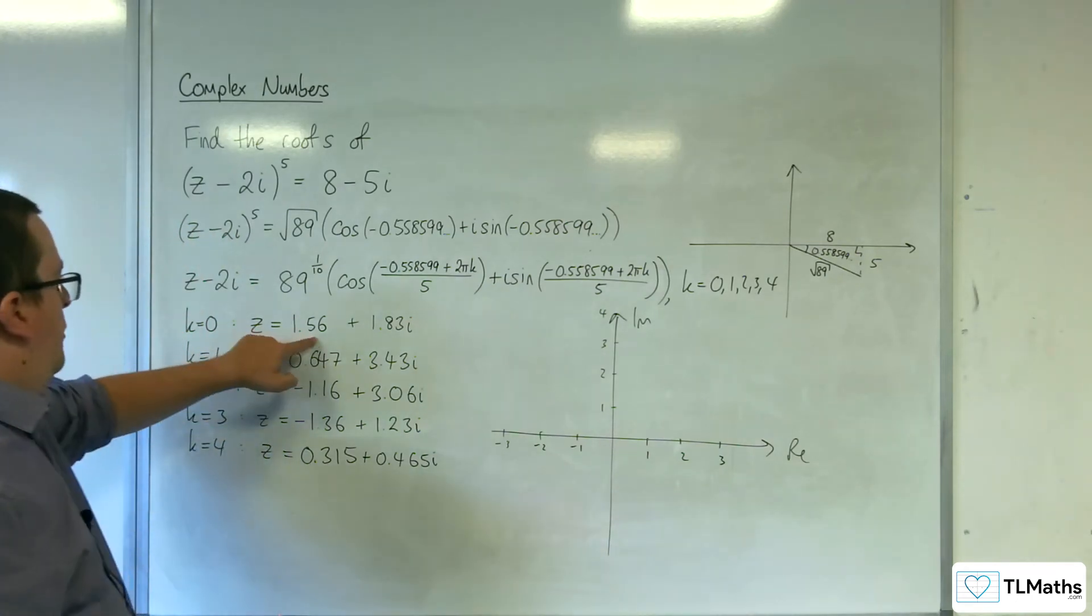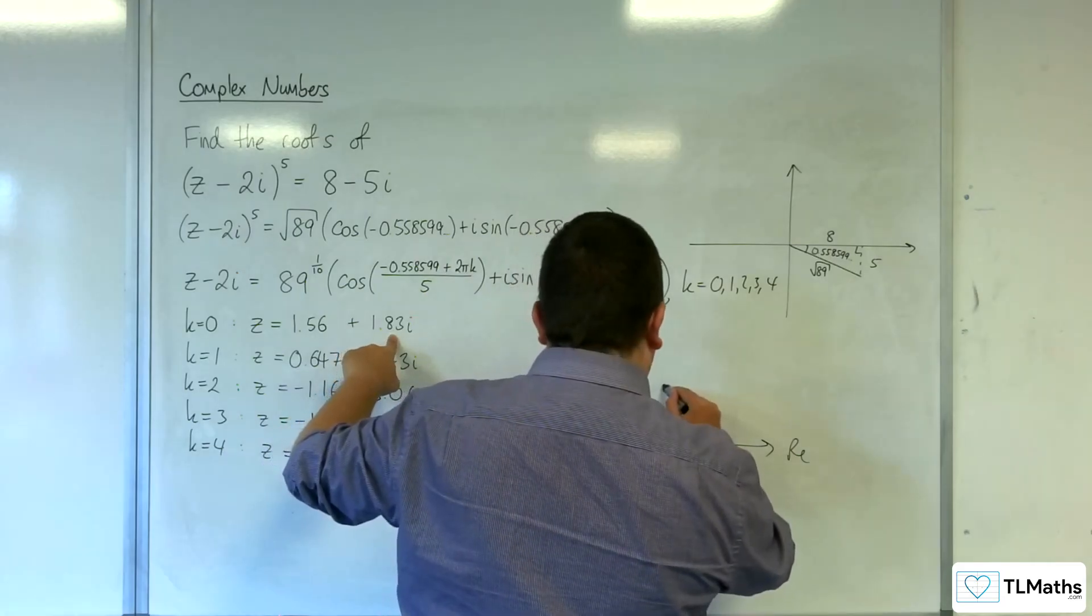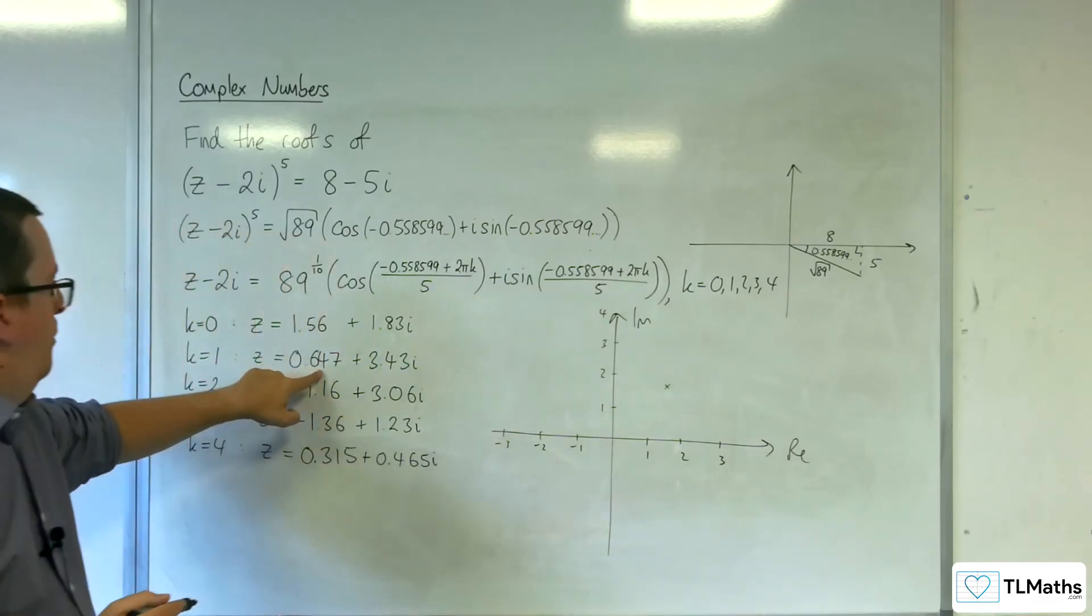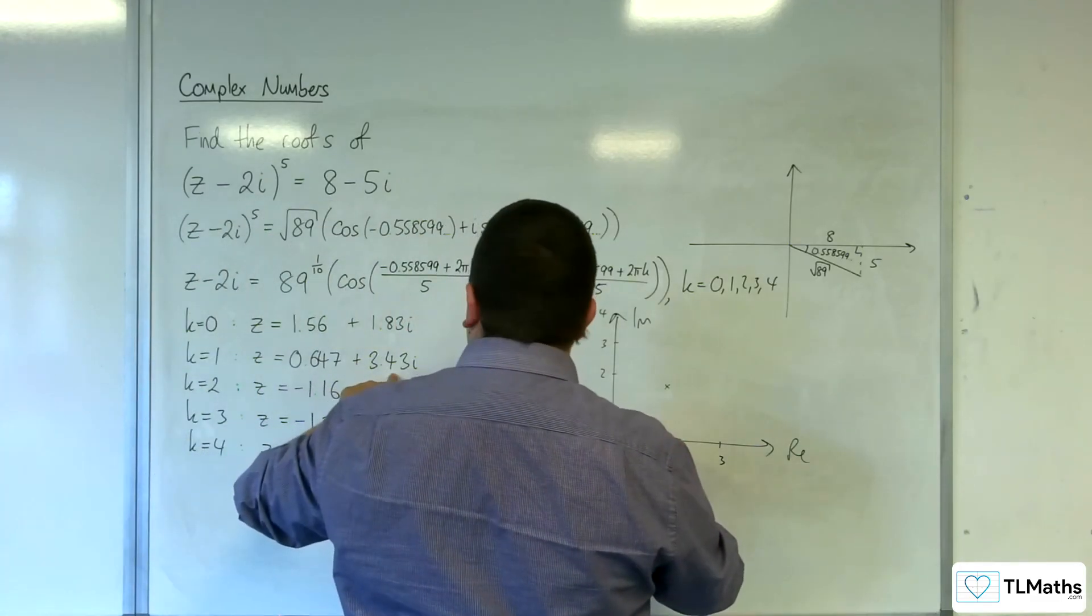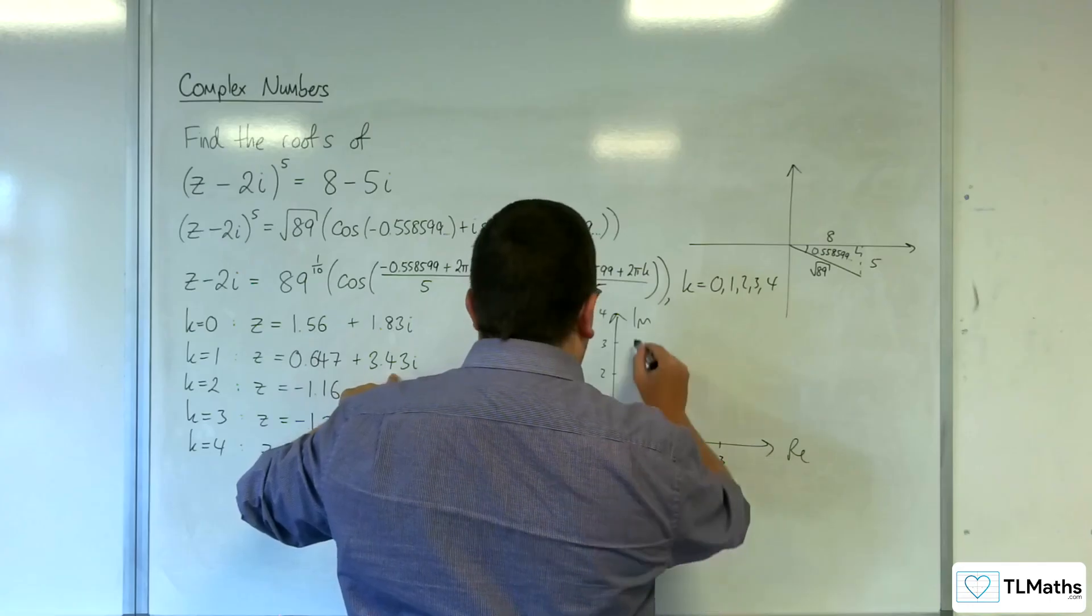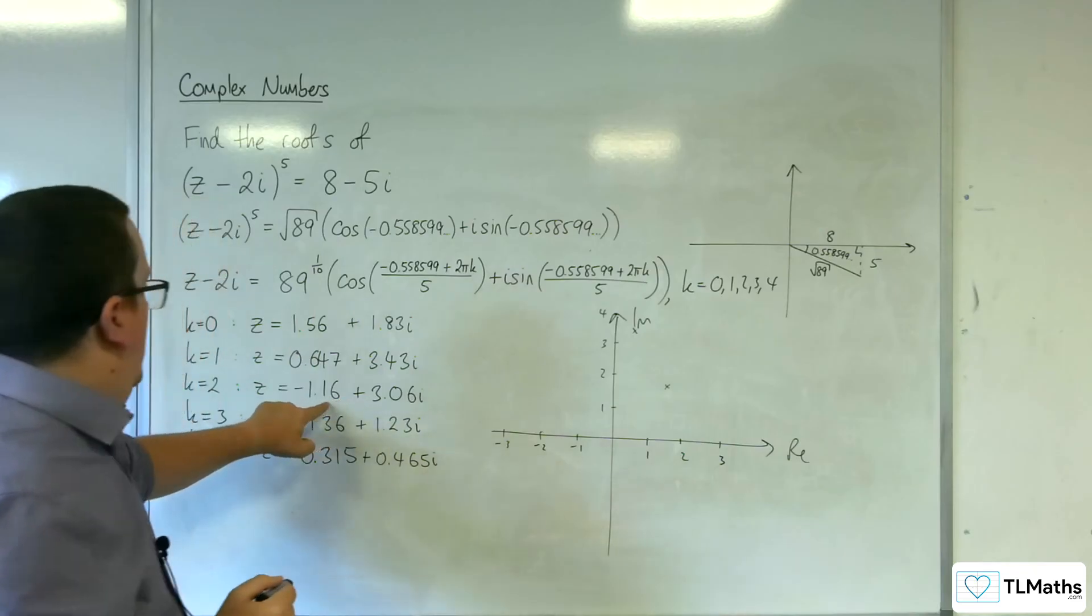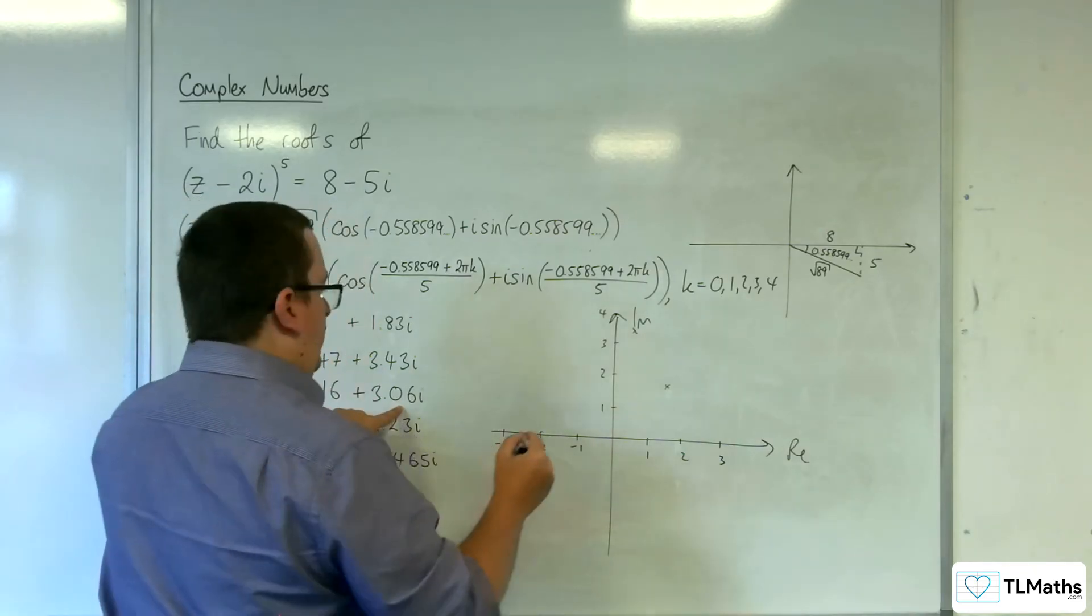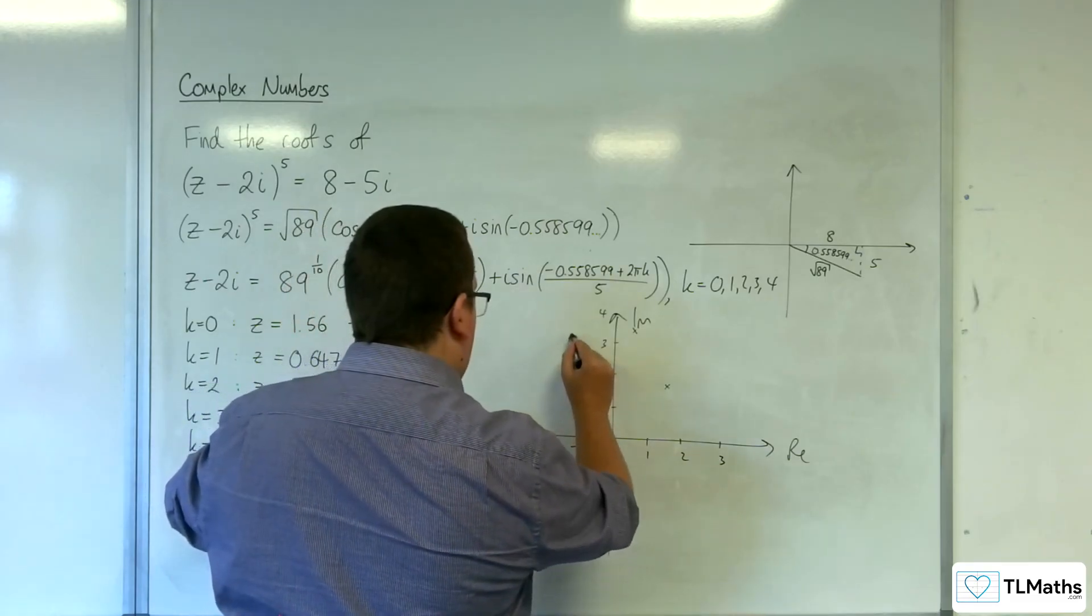So 1.56 plus 1.83i. So something like there, maybe. That's your first one. 0.647 plus 3.43i. So 0.647, 3.43. So somewhere up here. Minus 1.16 plus 3.06i. So somewhere around there.